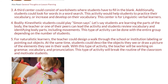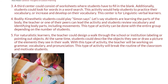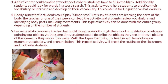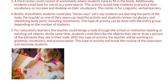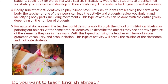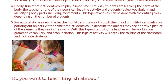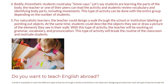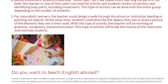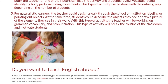For naturalistic learners, the teacher could design a walk through the school or institution, labeling or pointing out objects. Students could describe the objects they see or draw a picture of the elements they encounter on their walk. With this activity, the teacher will be working on grammar, vocabulary, and pronunciation. This type of activity will also break the routine of the classroom and motivate students.